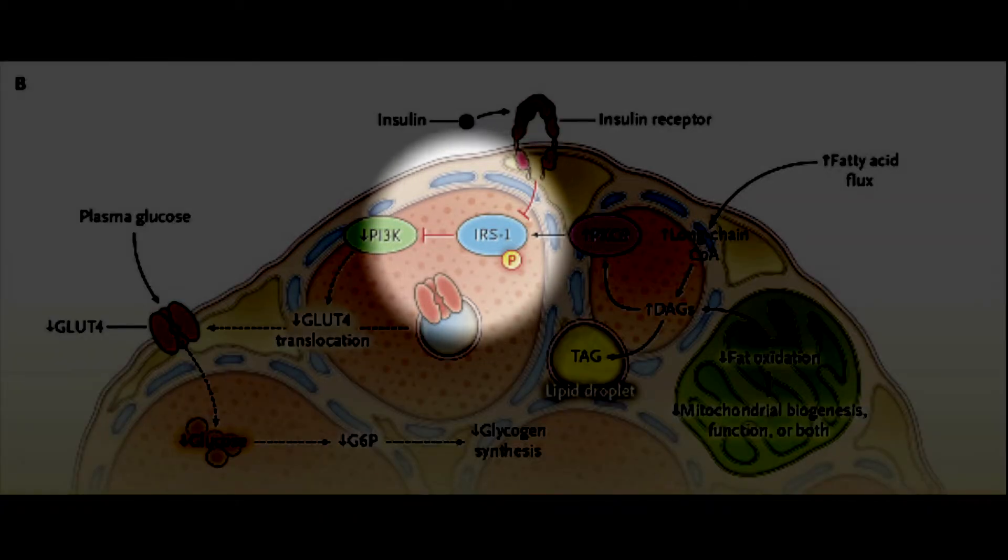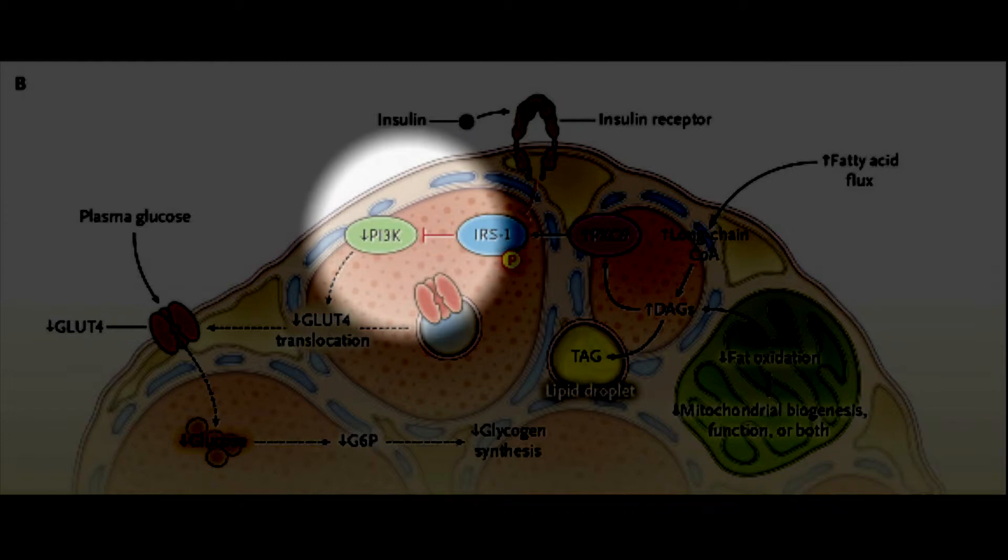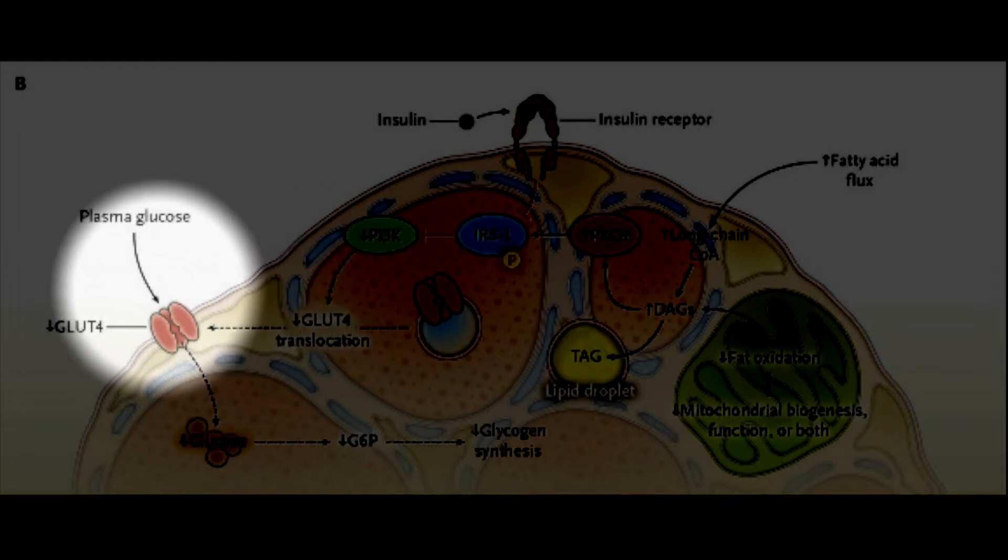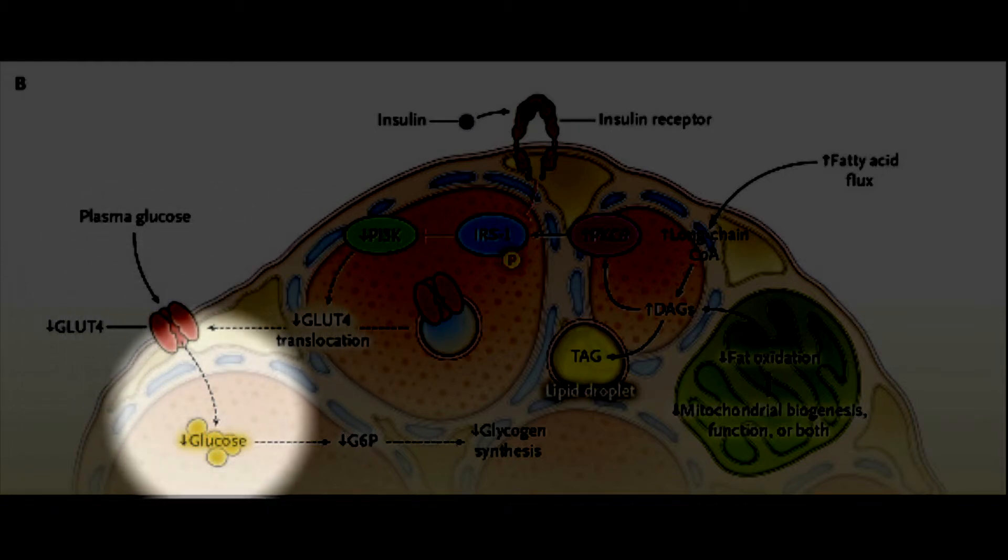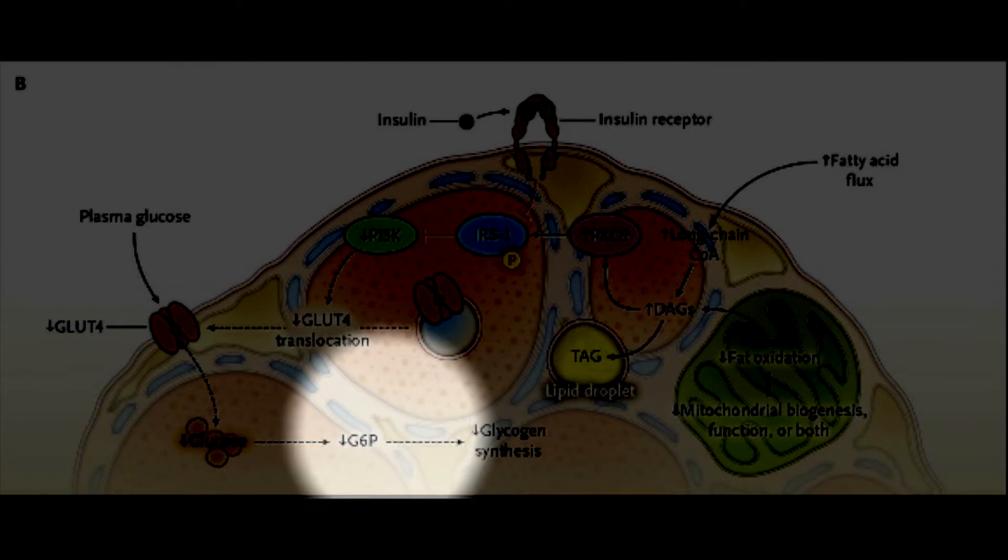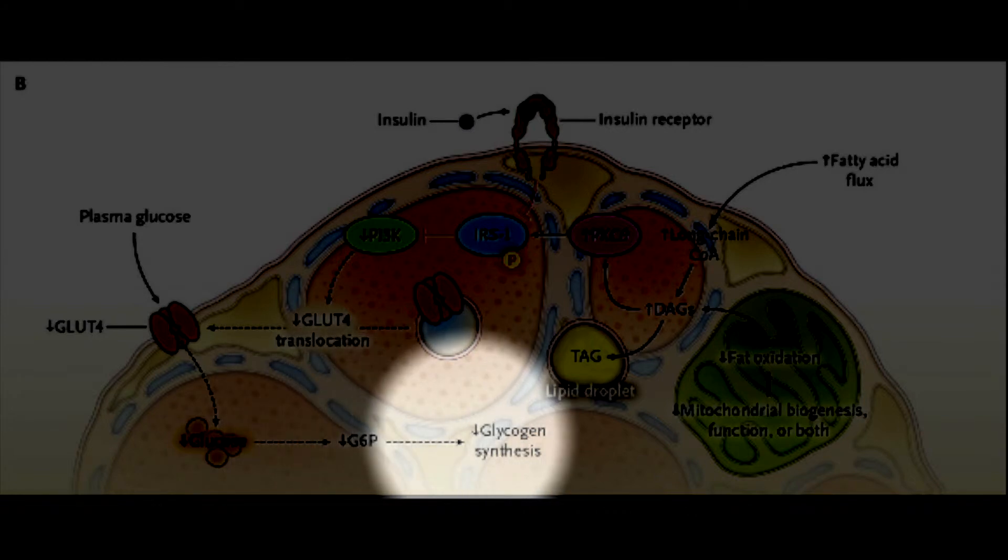This leads to a cascading effect where phosphatidyl inositol 3-kinase doesn't work, which doesn't stimulate the glucose transporter element, which then doesn't allow glucose to enter the cell, which decreases the glucose 6-phosphate kinase from allowing glucose to be stored as glycogen.